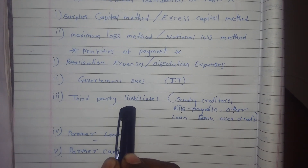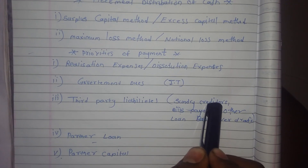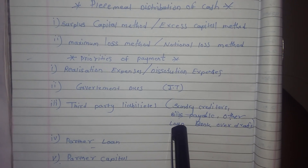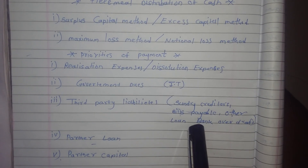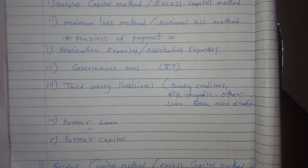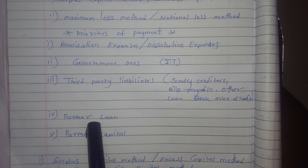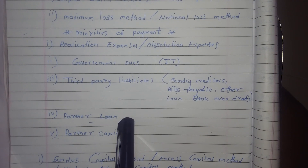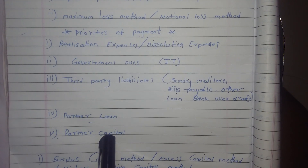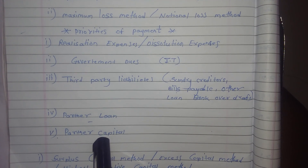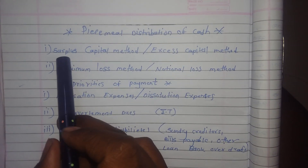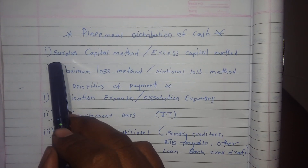In third party liabilities, we have sundry creditors, bills payable, other loans, bank overdraft, etc. Then we will pay for partners loan, and then we will pay for partners capital.